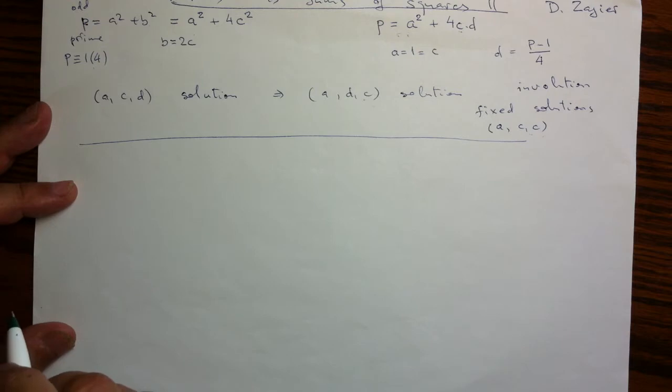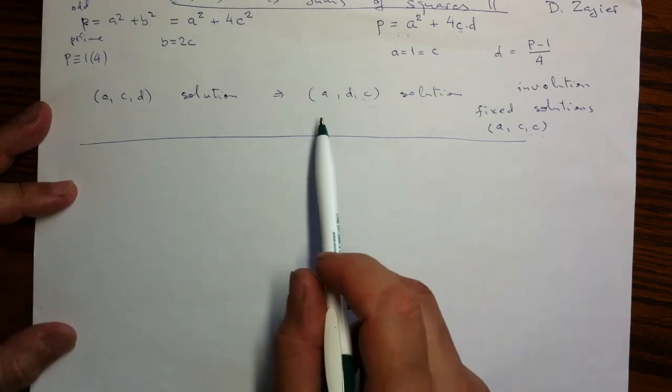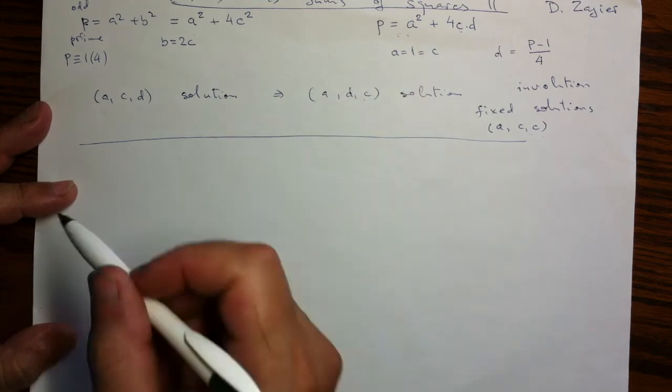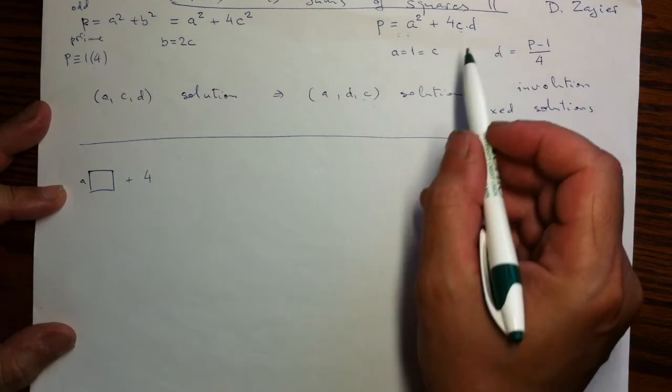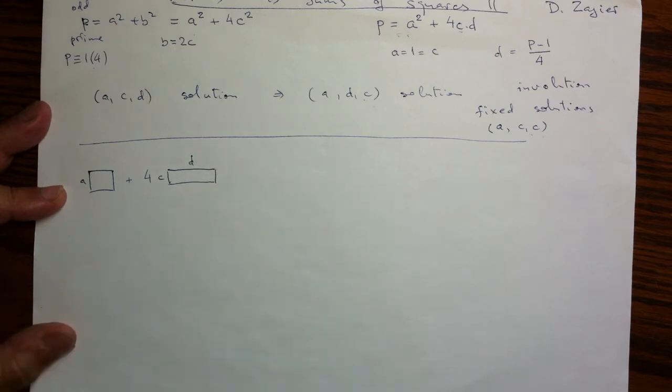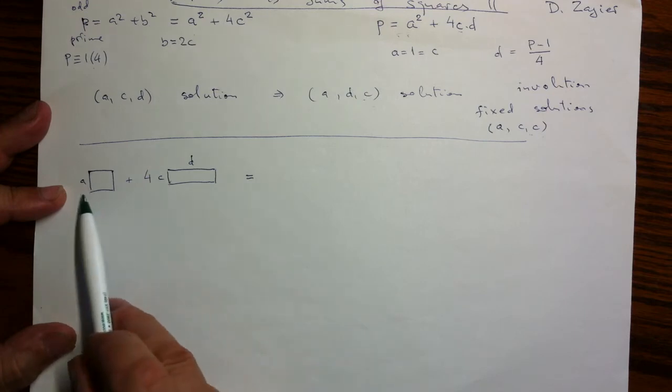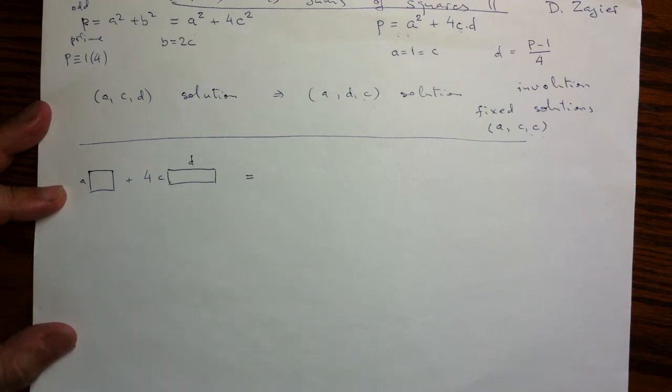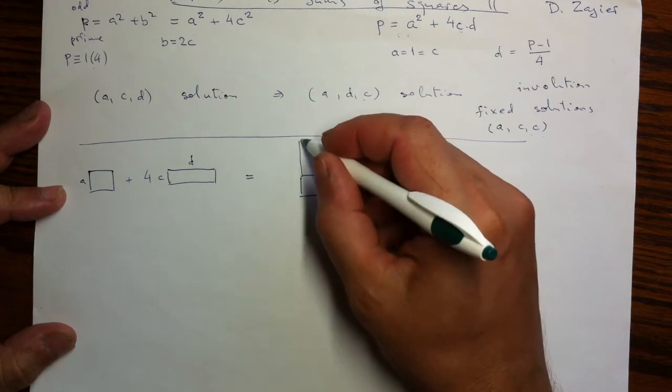And that can be argued with the help of a different involution. But before I will explain this involution, I will have to introduce a geometric shape, a geometric presentation for solutions of this equation. So what do we have? We have the square of some number A, and then we have four products which can be drawn as rectangles.